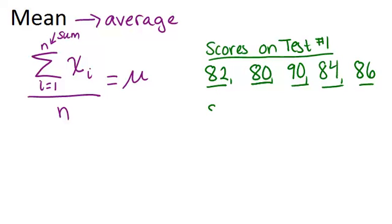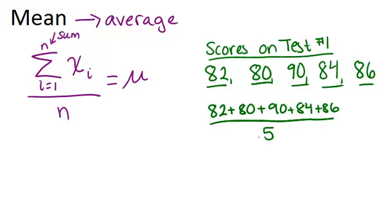We add 82 plus 80 plus 90 plus 84 plus 86 and then divide all that by five. When we add up those five numbers, we get 422, and when we divide that by five, we get our average is 84.4.